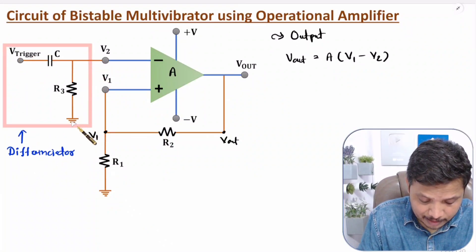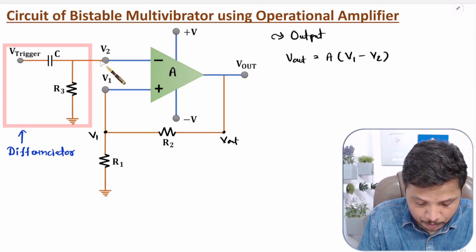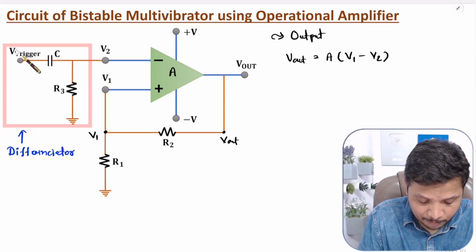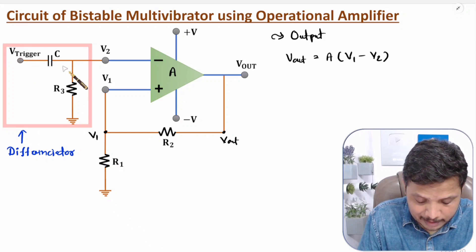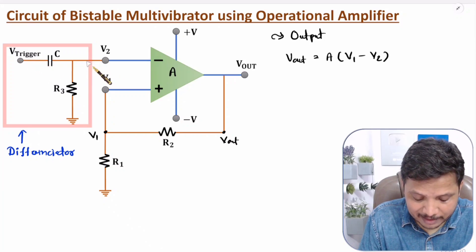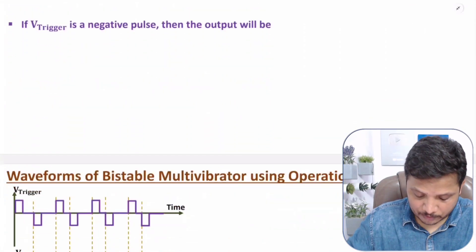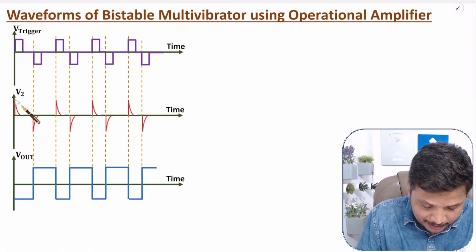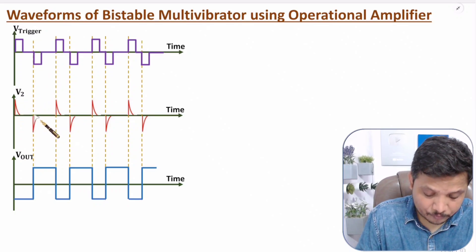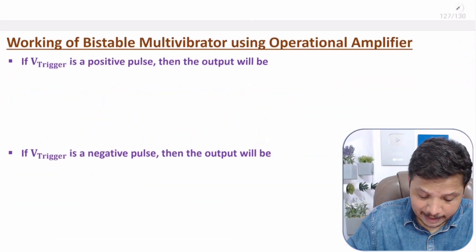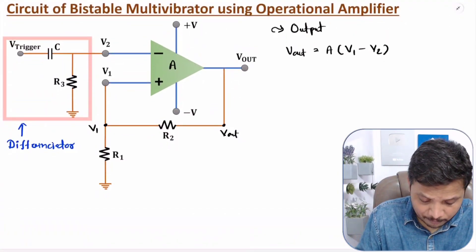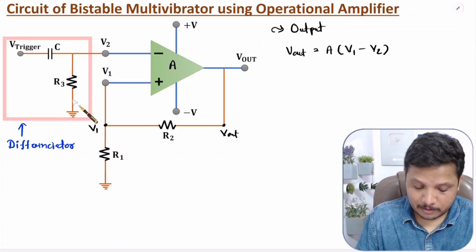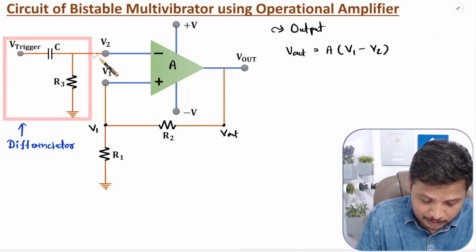This RC combination is a differentiator circuit. With this differentiator, what will happen? This differentiator will be generating spikes at output. So if you have a positive pulse at V trigger, then here you will be having a positive spike. If you have a negative pulse at V trigger, then here you will be having a negative spike. During positive pulse, we have positive spike at V2, and during negative pulse, we have negative spike at V2. So V2 is happening as per the trigger pulse.